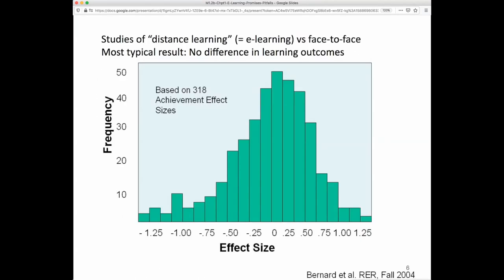More generally, there have been what are called meta-analyses that summarize studies like the one I just showed you, to see what effect the media might have had on performance. This covered distance learning or e-learning compared to face-to-face instruction, and 318 different studies were compared. The effect size indicates how big the difference is, in standard deviation terms, between the mean of those in distance learning on a post-test versus those in face-to-face.